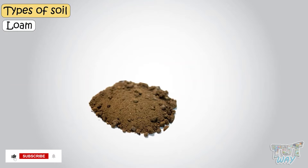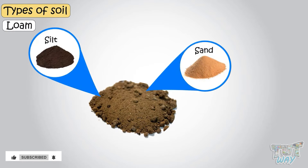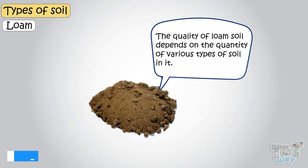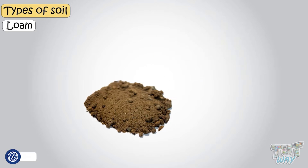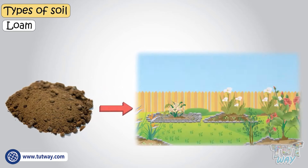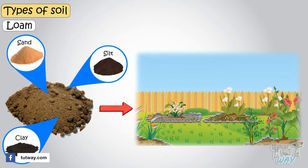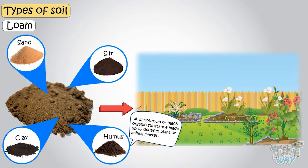Loam is a mixture of sand, silt, and clay. The quality of loam soil depends on the quantity of various types of soil in it. This is why loam soil is always the first choice of a gardener, as it's best for plant growth since it is a mixture of all types of soil and it has humus too.